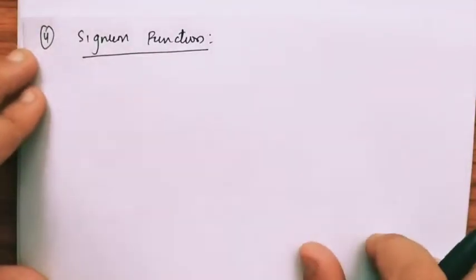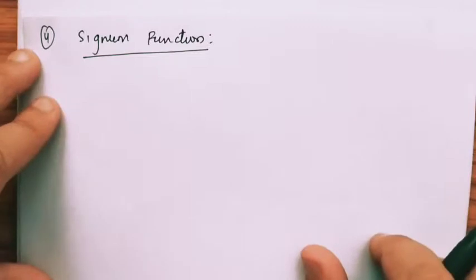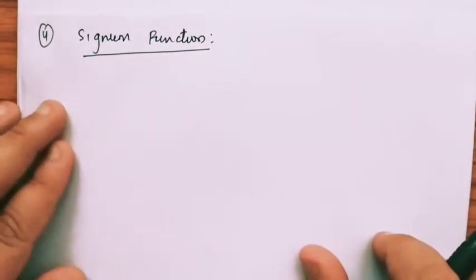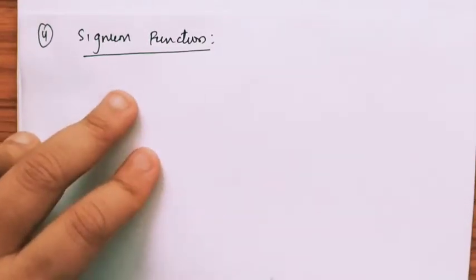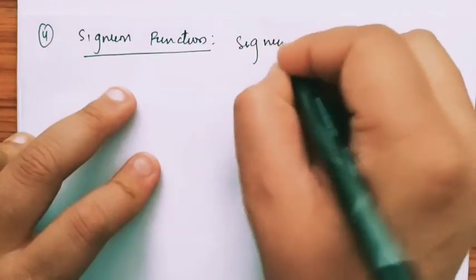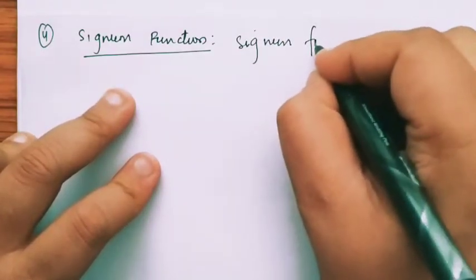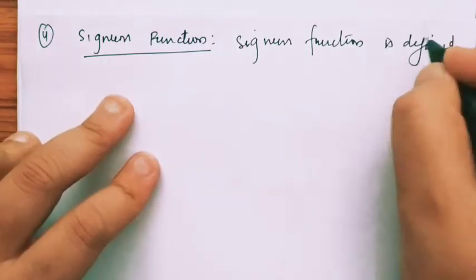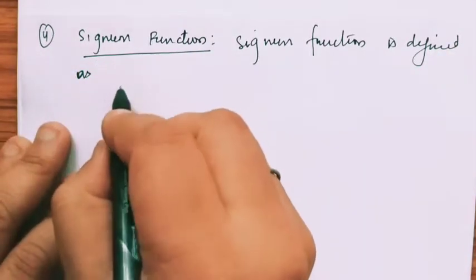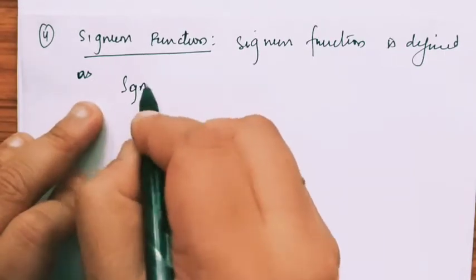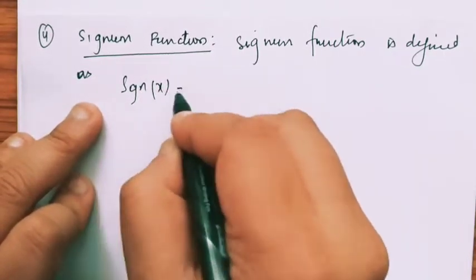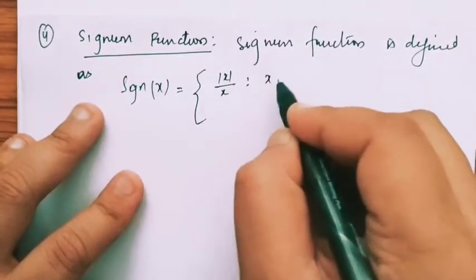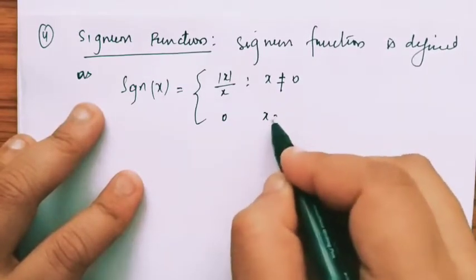Now, the next function we are going to define is called the signum function, because we have understood what the modulus function is. We will use the definition of the modulus function to define the signum function. Signum — SGN — of X is defined as mod X by X when X is not equal to 0, and 0 when X is 0.